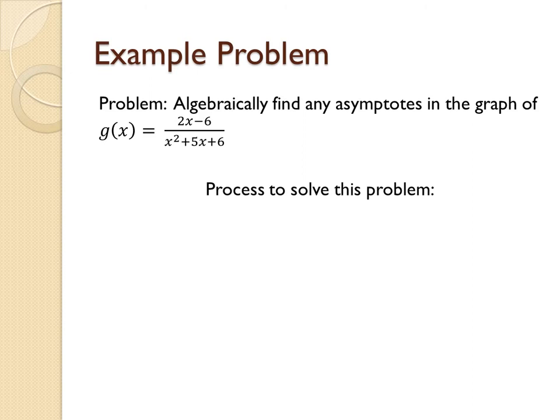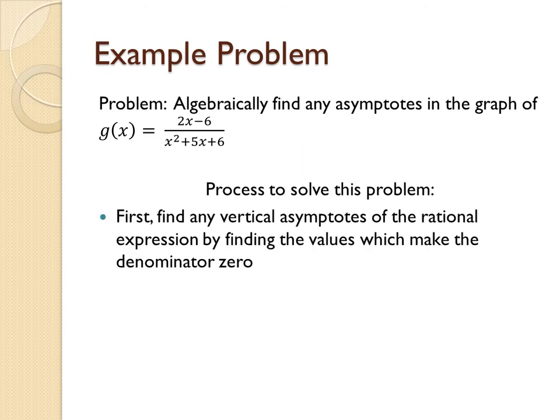the general process I would follow is to first find any vertical asymptotes by finding what values will make the denominator zero. Second, I would then determine the horizontal asymptote of this rational expression.